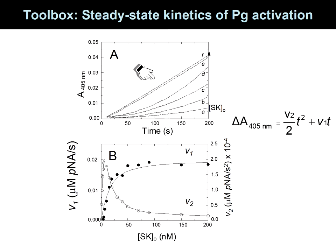Panel A shows what the data looks like for hydrolysis of a chromogenic substrate — these are progress curves that are curved, not straight, because they follow a parabolic equation. We fit that equation to those data and get two numbers out: V1 and V2, two different kinds of velocities. In panel B, V1 shows an SK dependence very different from V2 because they measure different things, and we can extract all the kinetic parameters we need by analysis of panel B.